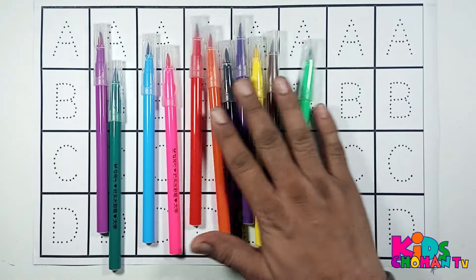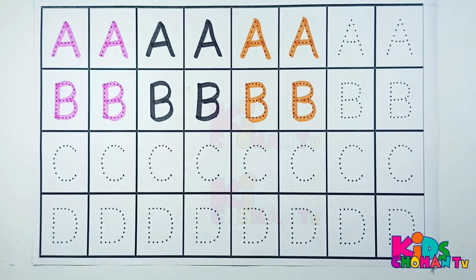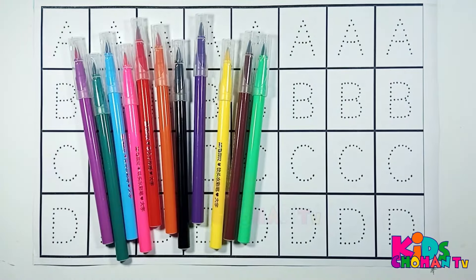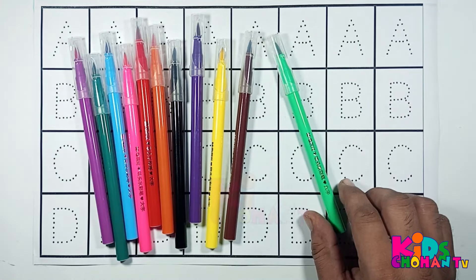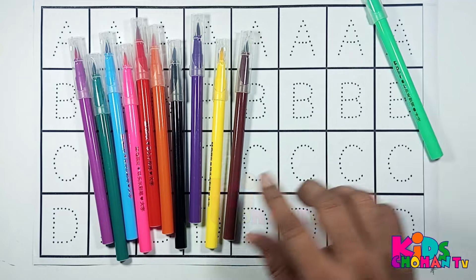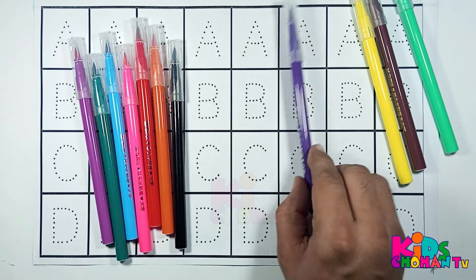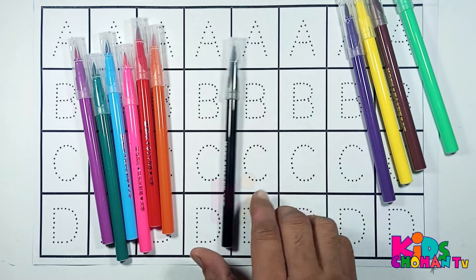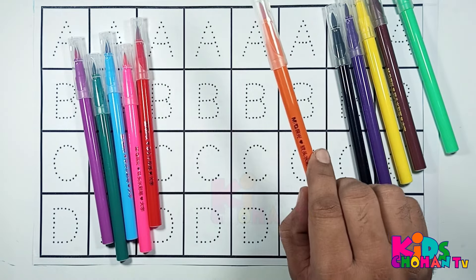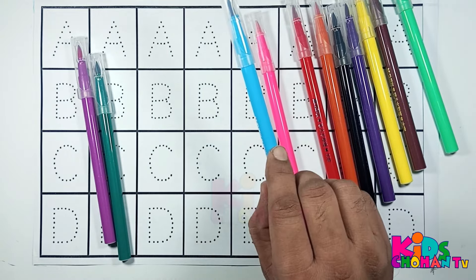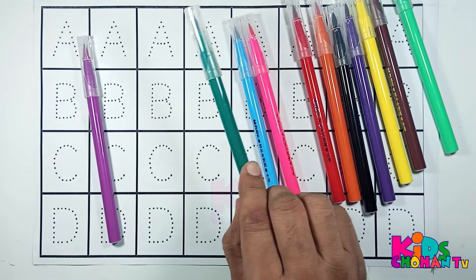Hi kids, welcome back! Let's learn colors: green, yellow, black, orange, red, pink, sky blue, green, and purple. In this video we will dress capital letters A, B, C, D.